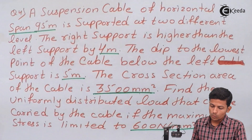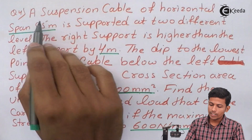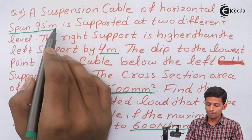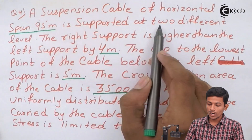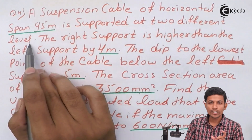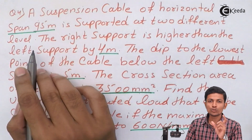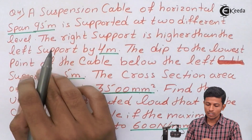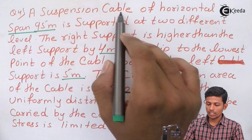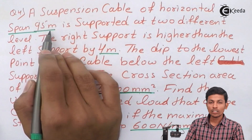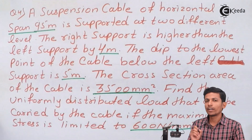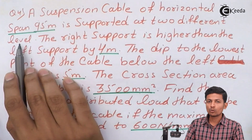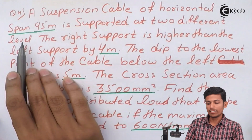Question number 4: A suspension cable of horizontal span 95 meters is supported at two different levels. Students, first listen and read the question carefully — whether it is supported at the same level or different level. It is supported at two different levels.